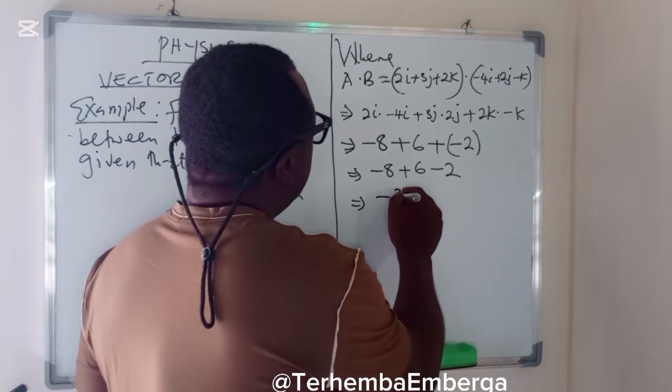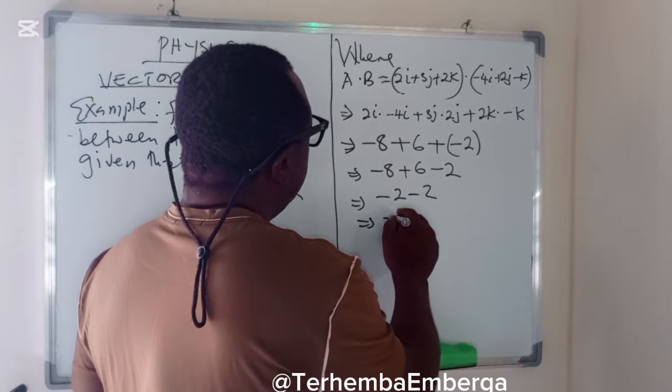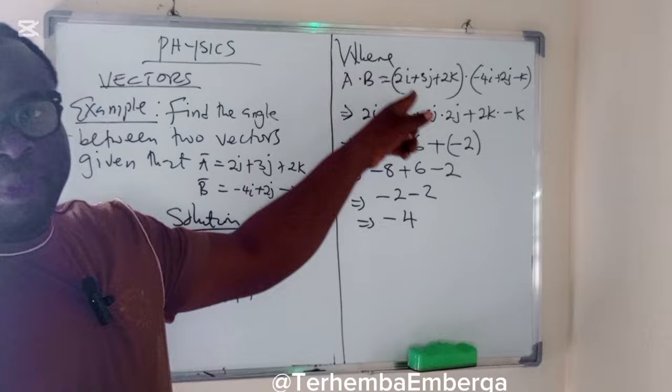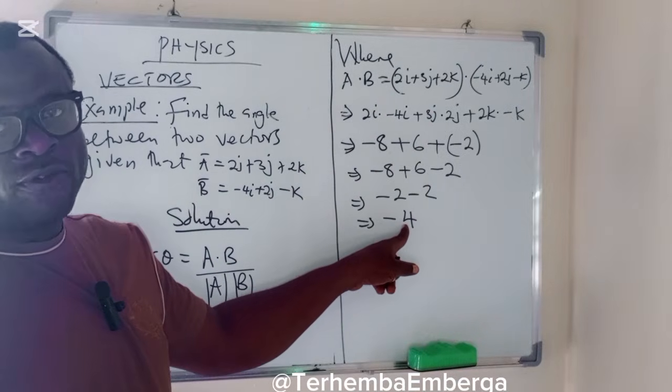So we can write this as minus 8 plus 6 is minus 2, minus 2 minus 2, which becomes minus 4. So it means that A dot B is minus 4.